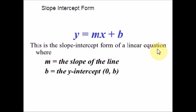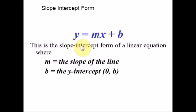In mathematics, we often deal with graphs. In graphs, we can see many lines. Those lines are denoted by the equation of lines. Lines are commonly written in what's called slope-intercept form. When an equation for a line is written in this form, it is easy for us to see what the slope of the line is and what the y-intercept is. Hence, we get the name slope-intercept form.